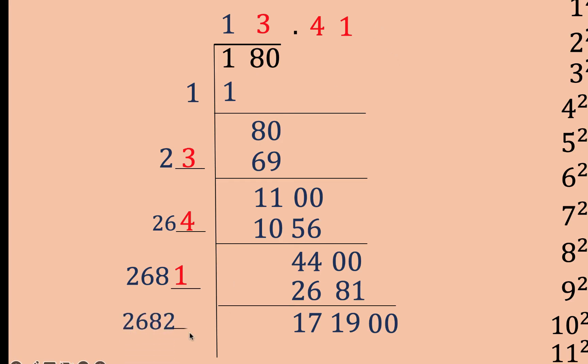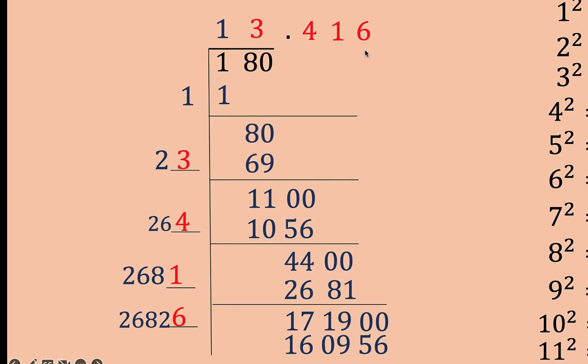Double 1,341 to get 2,682. And then by trial and error again, find another digit so that this digit and the digit that we're going to put here are the same. And when multiplied, that will give us the closest number to this number. And that number must be 6 because when you multiply, you get a number that's close to this number. And the process continues. And so the square root now of 180 is approximately equal to 13.416.